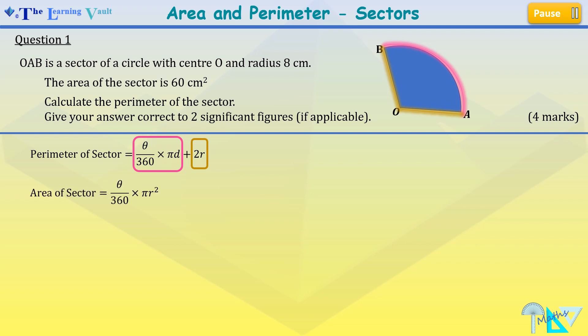The area of the sector's formula is theta over 360 times pi r squared. So we have 60 equals theta over 360 times pi times 8 squared.